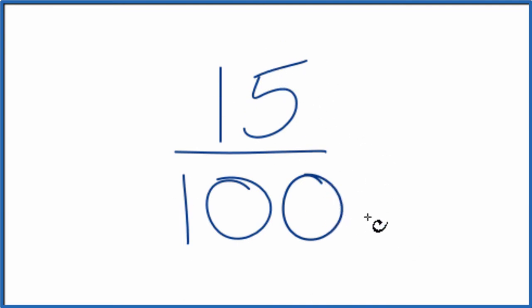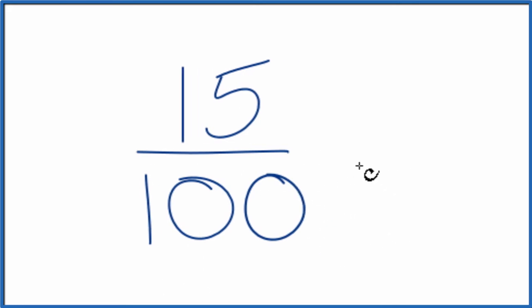Divide 15 and 100 by that common multiple. That should give us our reduced fraction. I know that 5 would go into 15 three times, and it would also go evenly into 100. So let's start with that.